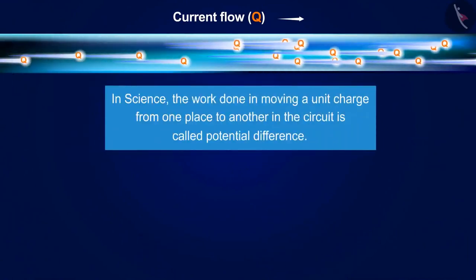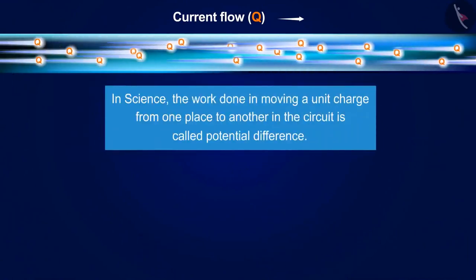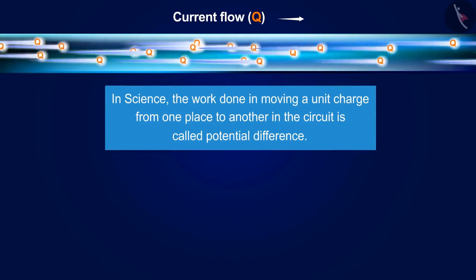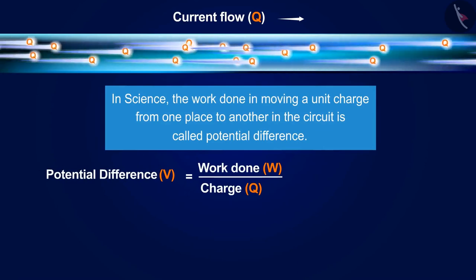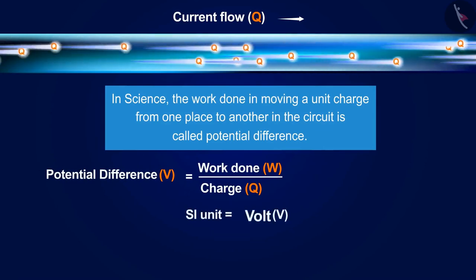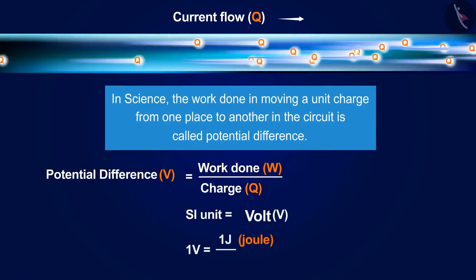In science, the work done in moving a unit charge from one place to another in the circuit is called potential difference. The difference is represented by the symbol V, and its SI unit is volt. A volt is the ratio of a joule and a coulomb.